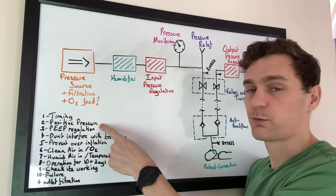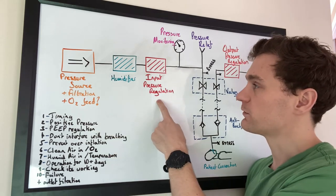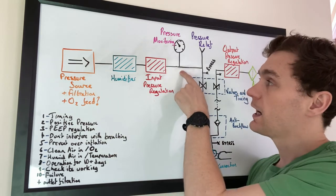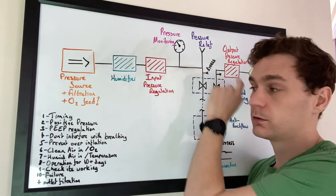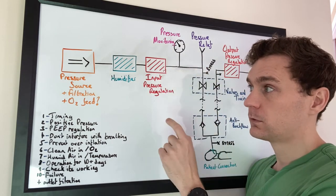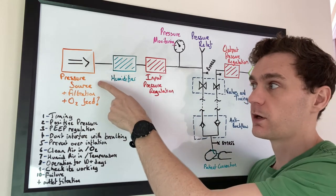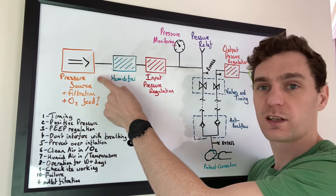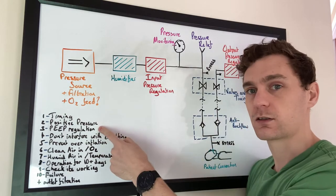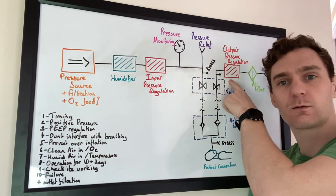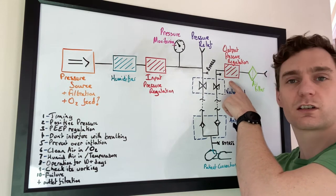Second thing, positive pressure. Yep, we've got input pressure regulation here and we've got pressure monitoring. We also have this pressure relief and that's all being delivered by the pressure being maintained by this pressure source. Third thing, PEEP regulation. Yep, that is exactly what this is doing. This is the PEEP pressure regulator.